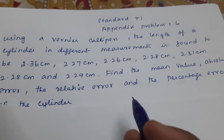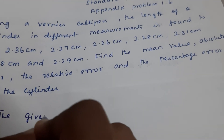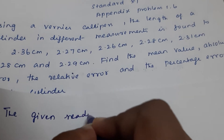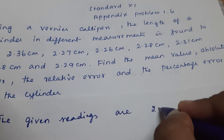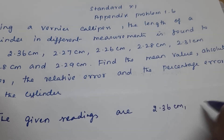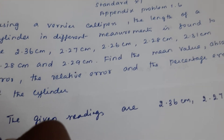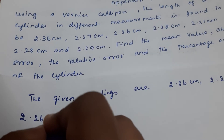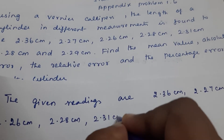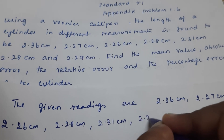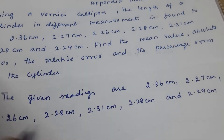We have to find out all the errors here. The given readings are 2.36 cm, 2.27 cm, 2.26 cm, 2.28 cm, 2.31 cm, 2.28 cm, and 2.29 cm.